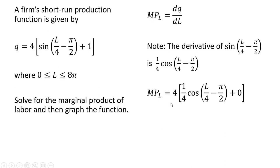So therefore the marginal product of labor is going to be as follows. So again the derivative of this sine function is one-fourth cosine of what's in parentheses here. The derivative of one is just zero, and then we got this four hanging around.